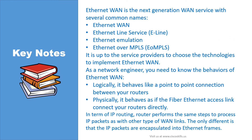Let's sum up our video with the key notes. Ethernet WAN is the next-generation WAN service with several common names: Ethernet WAN, Ethernet Line Service or E-LINE, Ethernet Emulation, and Ethernet over MPLS. It is up to the service providers to choose the technologies to implement Ethernet WAN. As a network engineer, you need to know the behaviors of Ethernet WAN. Logically, it behaves like a point-to-point connection between your routers. Physically, it behaves as if the fiber Ethernet access link connects your routers directly. In terms of IP routing, the router performs the same steps to process IP packets as with other types of WAN links — the only difference is that the IP packets are encapsulated into Ethernet frames. This is the end of this video.